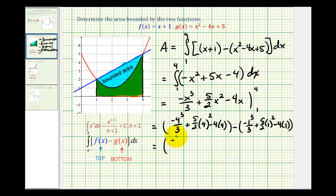So here we'll have negative 64 thirds, here we're going to have 16 times 5 halves, which will be 40 minus 16 minus the quantity negative 1 third plus 5 halves minus 4.